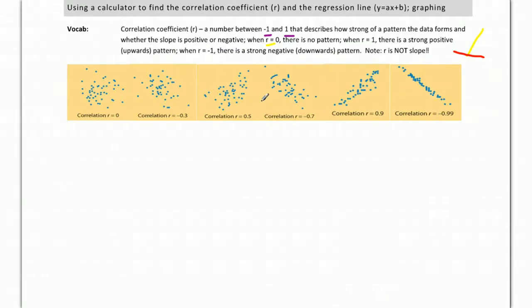Here's the tricky part that's going to catch you off guard: r is not the slope. It is not the slope at all. Yes, a negative pattern is going to have a negative value of r.